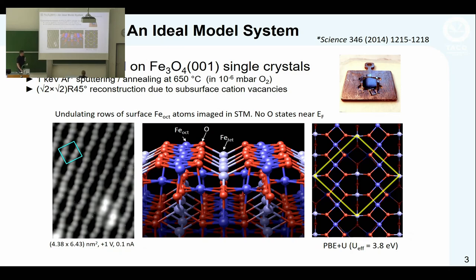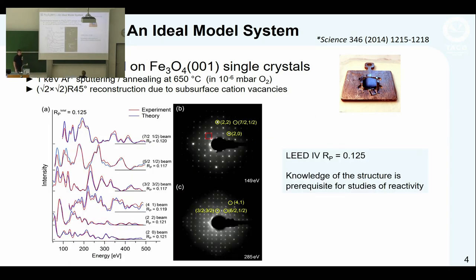Yesterday Michaela talked about understanding surface structure. Six or seven years ago, this was the first system we treated this way with LEED. Lutz Hammer did this investigation and eventually confirmed our structure proposed on the basis of STM and DFT. We got a LEED R factor of 0.125, one of the very best ever achieved on an oxide. We understand this surface structure really well.